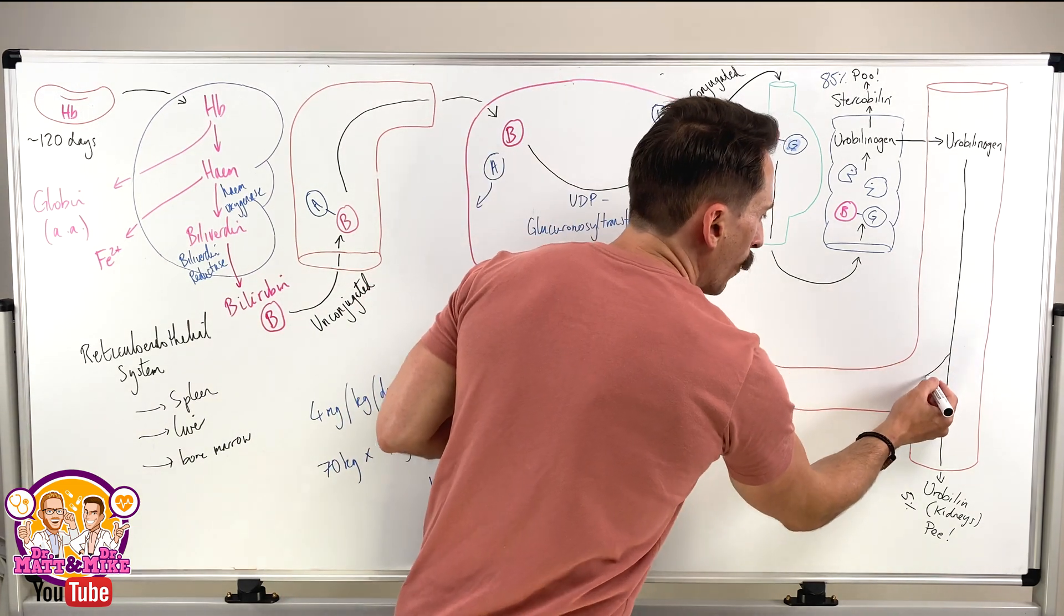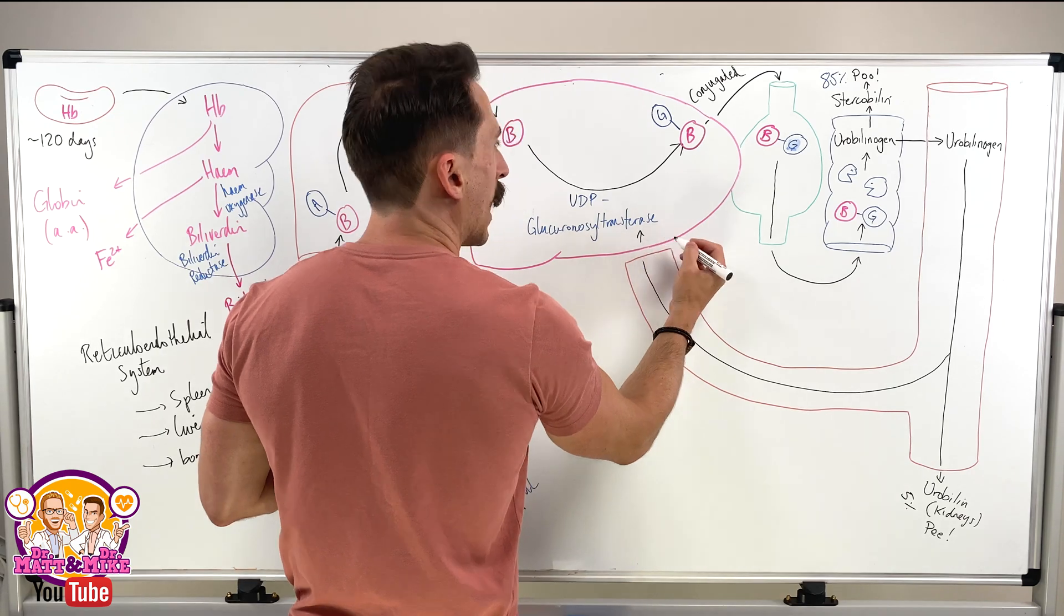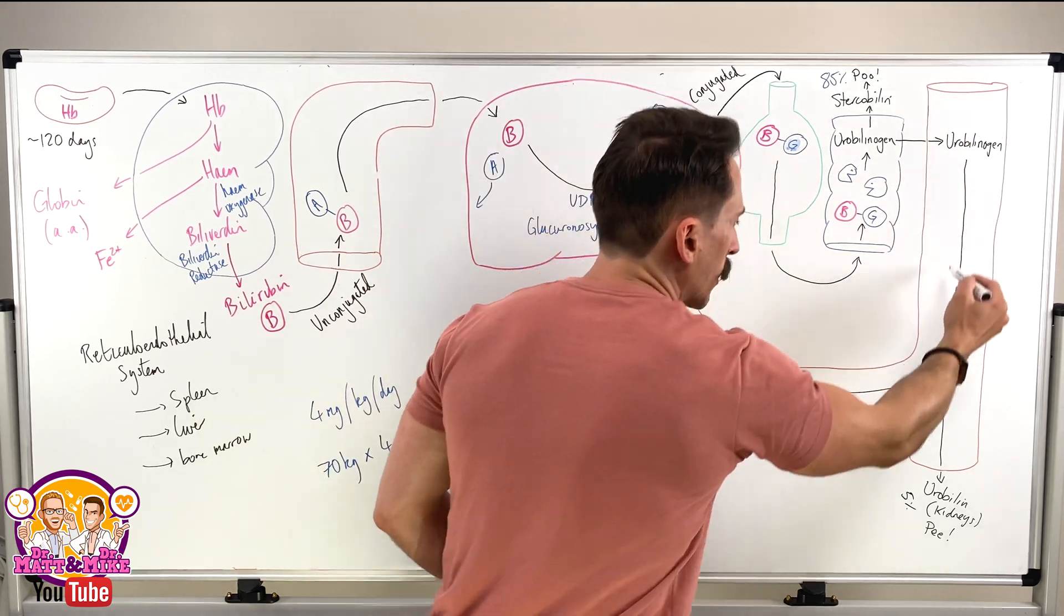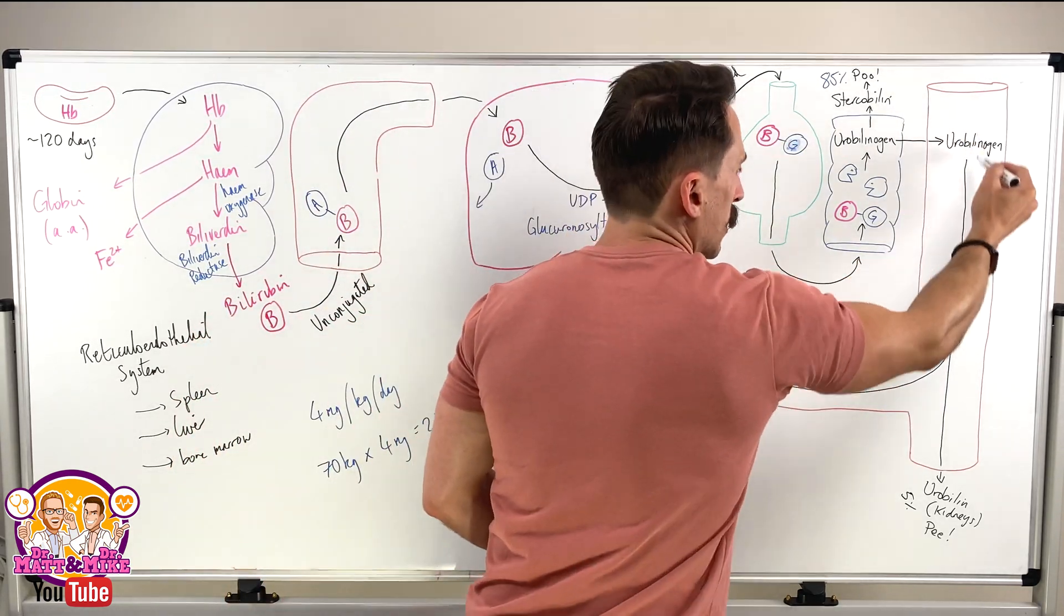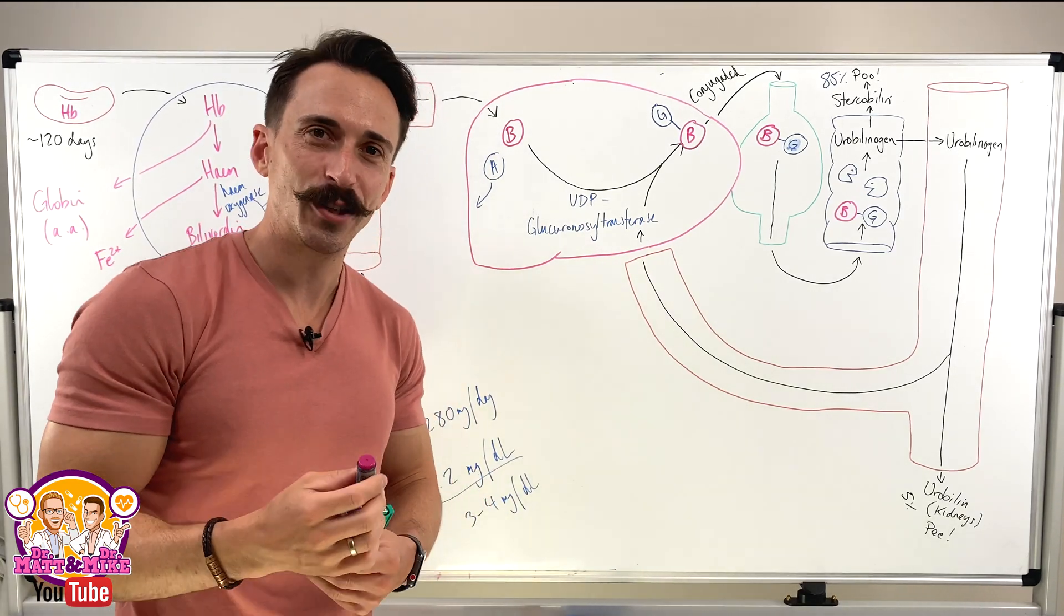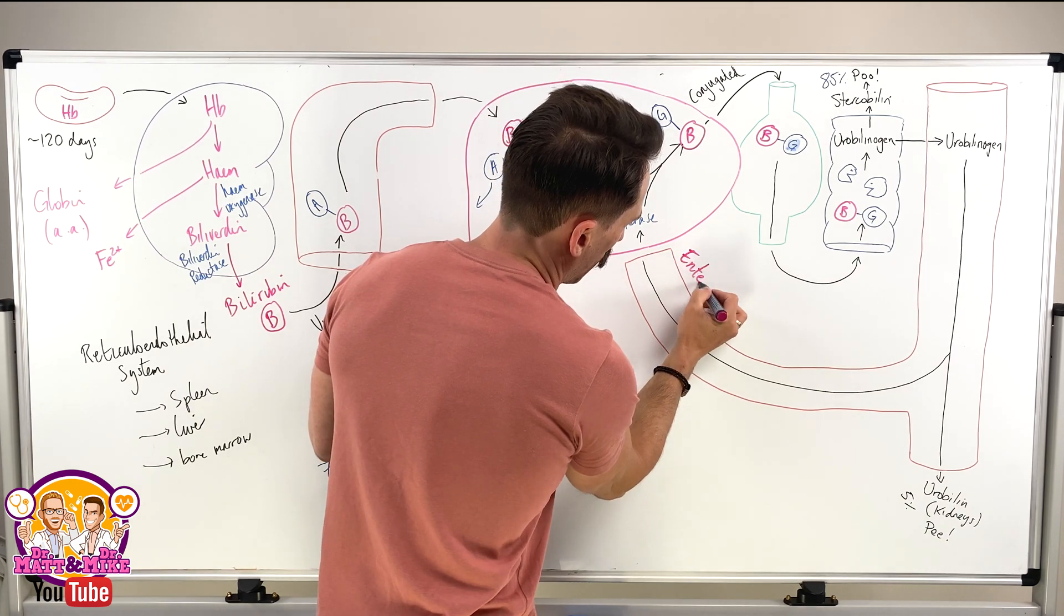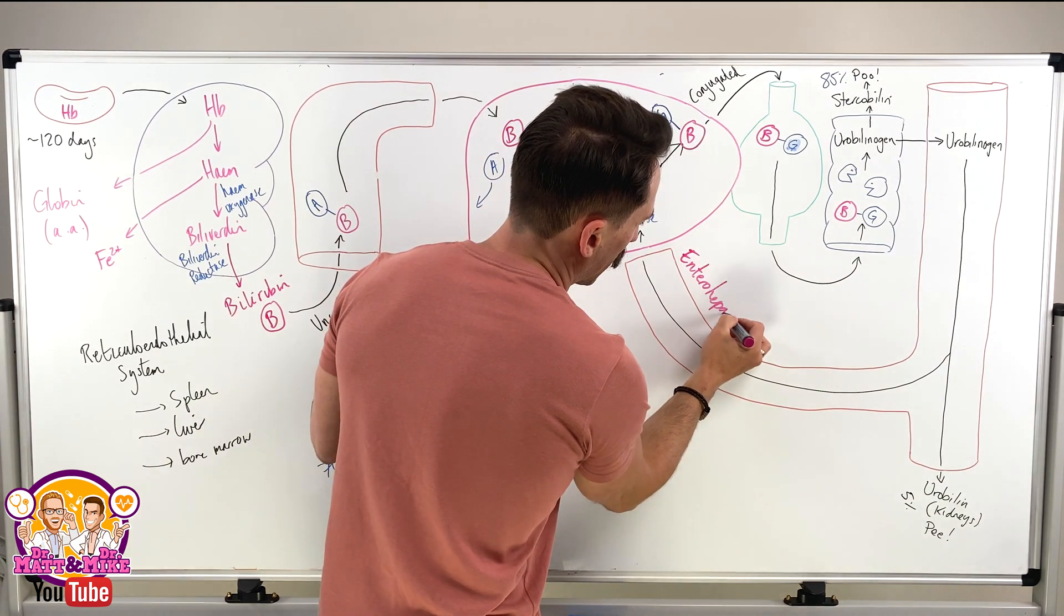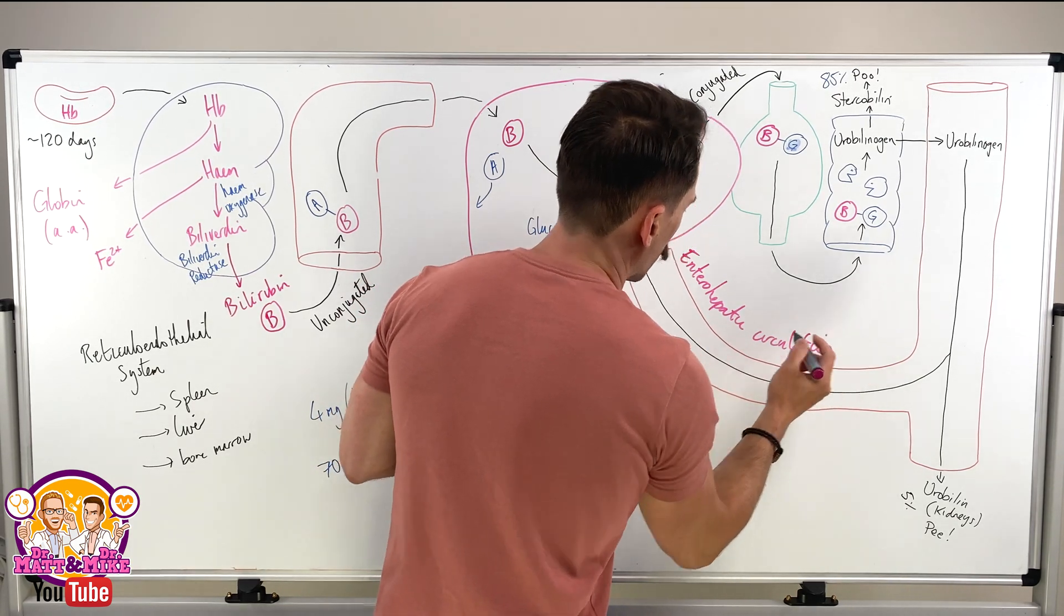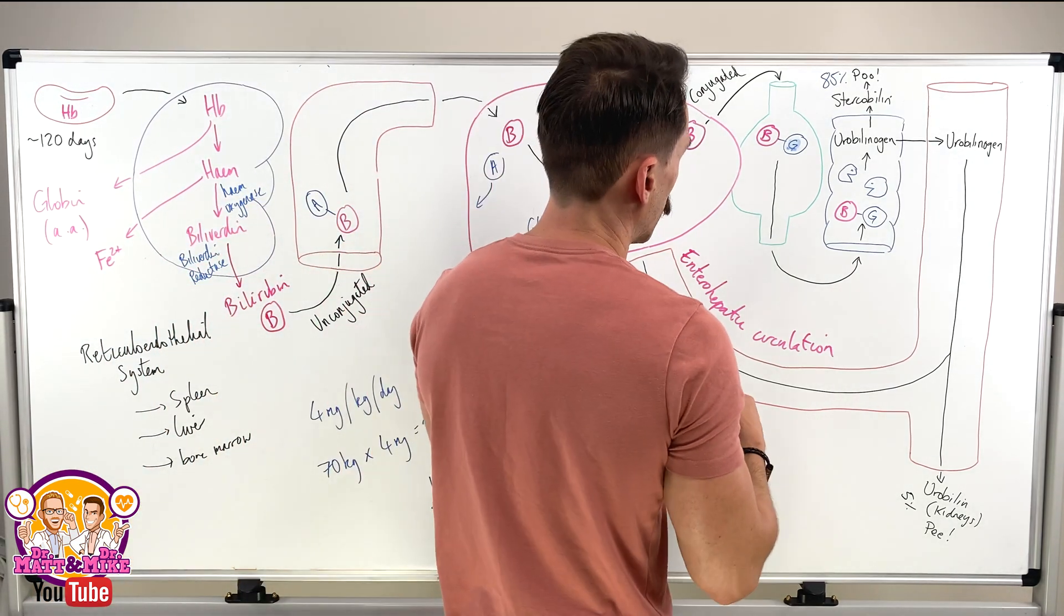Or it can go back to the liver. And if it goes back to the liver, we've got this cycle happening here. This circulation, what's called the enterohepatic circulation. Again, this is about 5% that this is happening to.